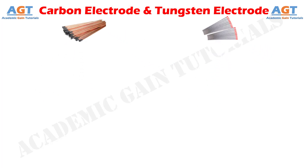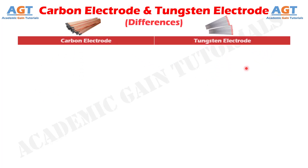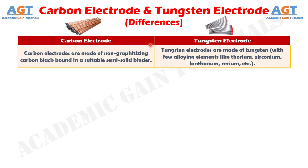Let's look into the basic differences between carbon electrode and tungsten electrode in a tabular form. Difference No. 1: Carbon electrodes are made of non-graphitizing carbon black bound in a suitable semi-solid binder, whereas tungsten electrodes are made of tungsten with few alloying elements like thorium, zirconium, lanthanum, cerium, etc.